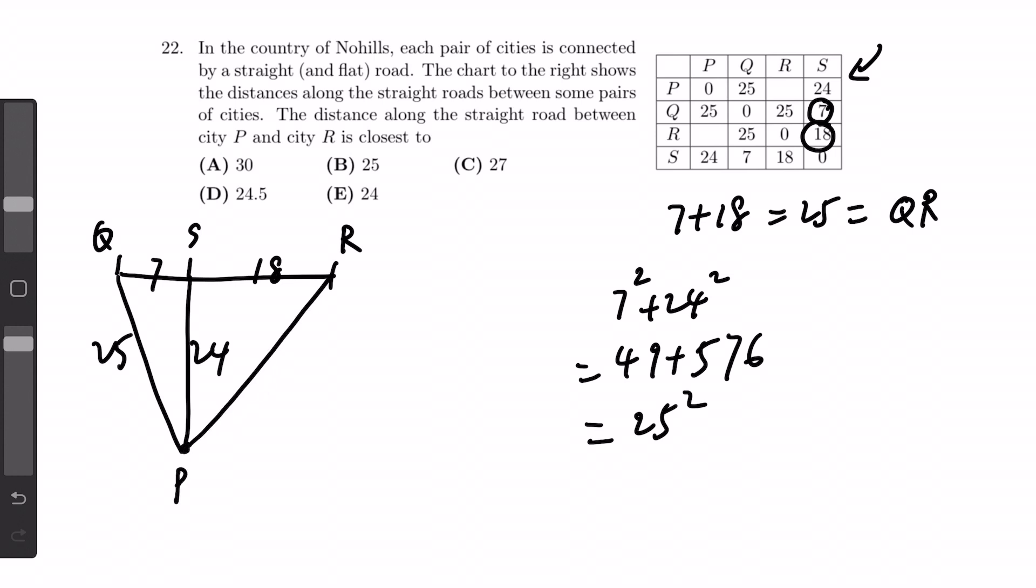And now we can use Pythagorean theorem again to calculate the distance between P and R. So it would be 18 squared plus 24 squared, square root equals to 30.